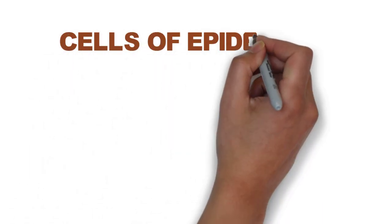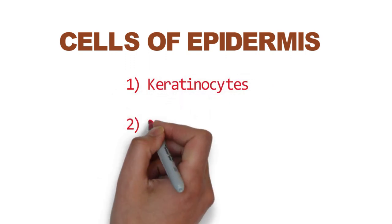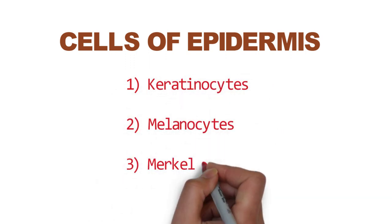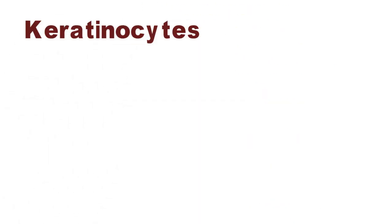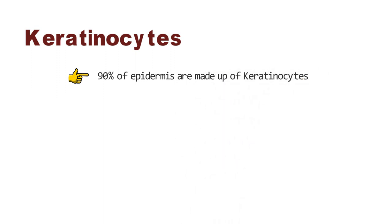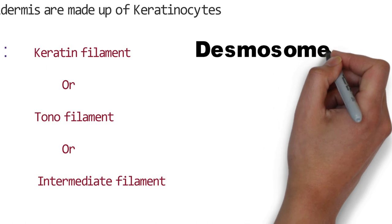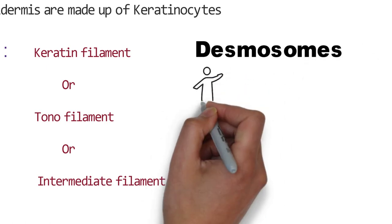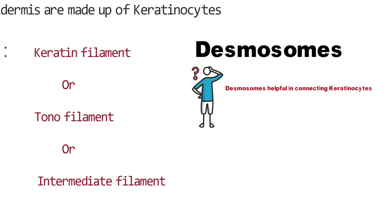Epidermis consists of four important cells: keratinocytes, melanocytes, Merkel cells, and Langerhans cells. 90% of the epidermis is made up of keratinocytes. The hallmark of these cells is keratin filament, also known as tonofilament or intermediate filament. Desmosomes are helpful in connecting keratinocytes.